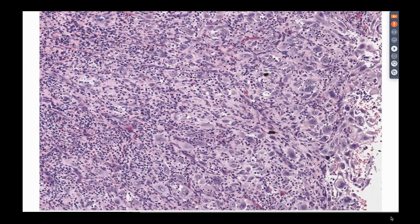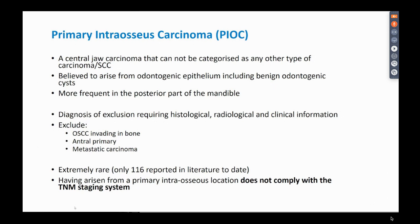Primary intraosseous carcinoma (PIOC) is a jaw carcinoma that cannot be categorized as any other type. It is believed to arise from odontogenic epithelium, particularly in long-standing odontogenic cysts. It is very common in the posterior mandible. For diagnosis you must exclude other causes: rule out oral squamous cell carcinoma invading bone, metastatic carcinoma from elsewhere, and for maxillary tumors an antral primary pushing into the maxilla. Despite being recognized for some time, only 116 cases have been reported to date. Because they arise in bone as primary bone cancers comprising squamous cells, they do not comply with any TNM staging system.